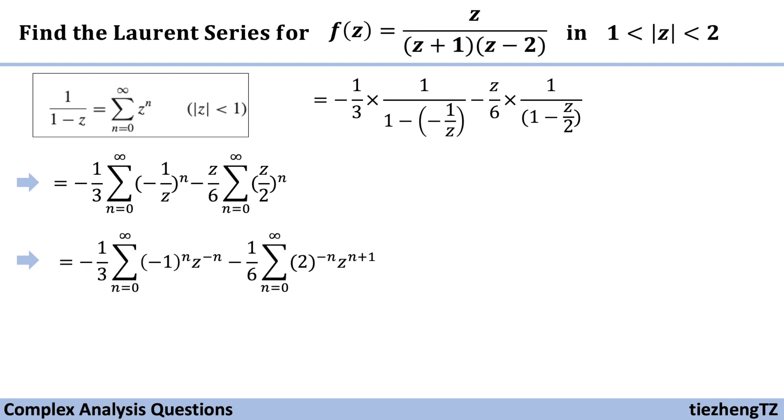Just be careful to make sure our final result is correct. And of course like what we have introduced before we can do a little bit more optimization which is not going to be shown here. And this is the result for this Laurent series for this given function z over (z+1)(z-2) in this given domain.